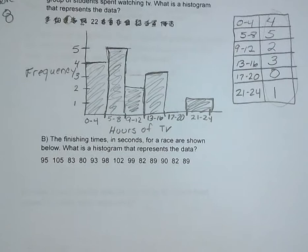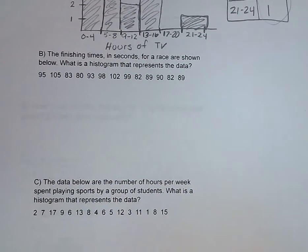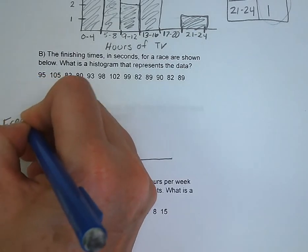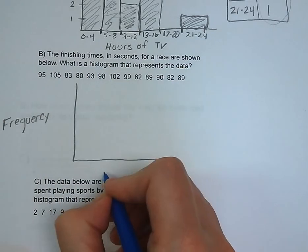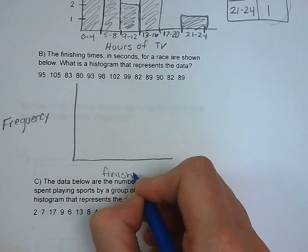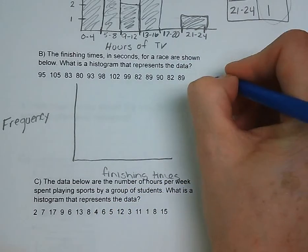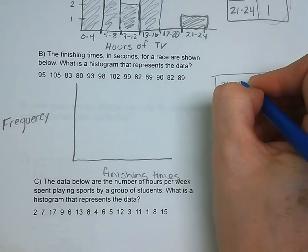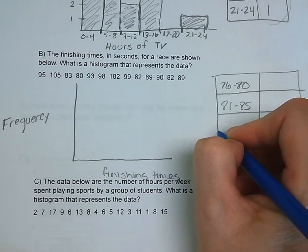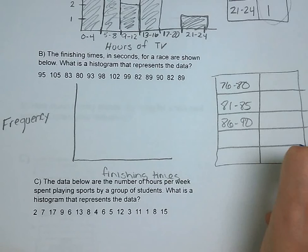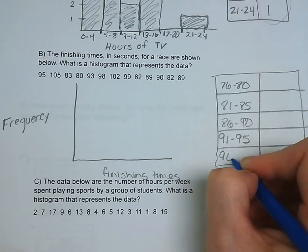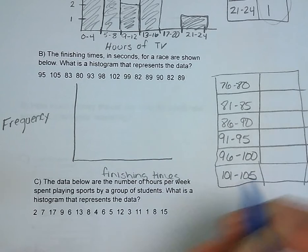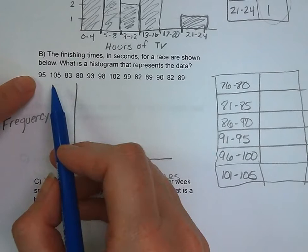Letter B. We've got the finishing times in seconds for a race are shown below. What is the histogram that represents the data? So I broke it up into 5 second intervals. You could choose to go more or less. So I started at 76 and went 76 to 80, 81 to 85, 86 to 90, 91 to 95, 96 to 100, and 101 to 105.